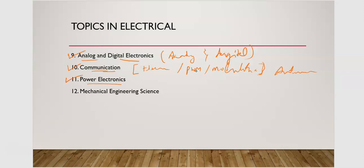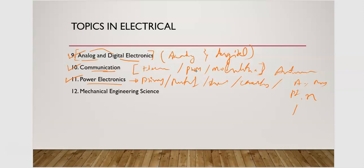Power electronics is interlinked with analog and digital electronics, making it relatively easy. This covers rectifiers, inverters, and converters — all of which are straightforward topics. Very important questions will come from power electronics, so prepare well.